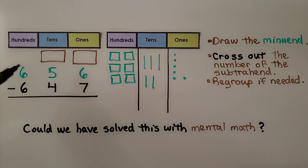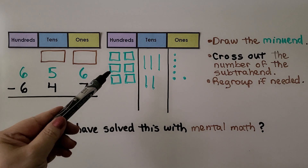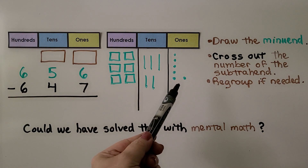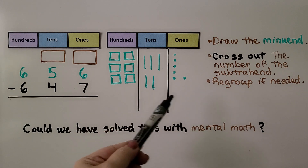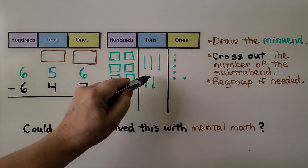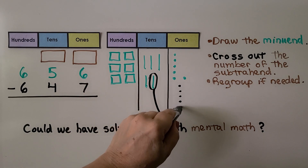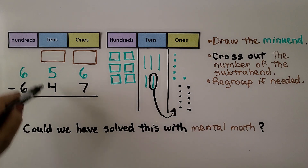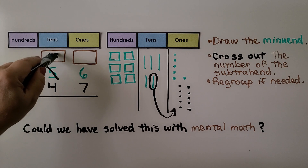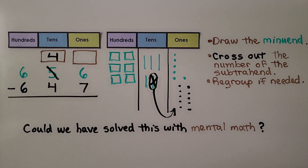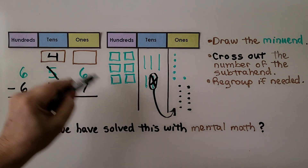Here we have 656 minus 647. We draw the minuend: six hundreds, five tens, six ones. I'm going to cross off 647. We only have six ones and we can't cross off seven, so we need to turn one of these tens into ten ones. We take the five tens and put one in the ones place as ten ones — now we have four tens. We cross this ten off because we moved it to the ones place. Now instead of six ones, we have sixteen ones.